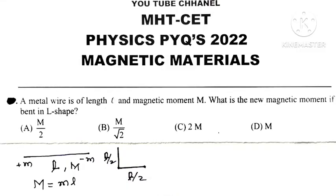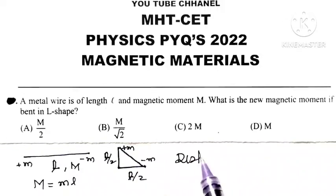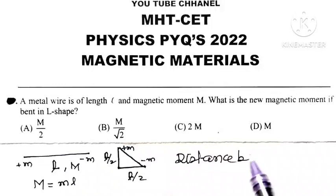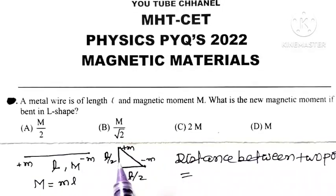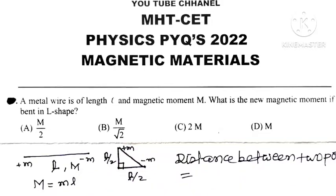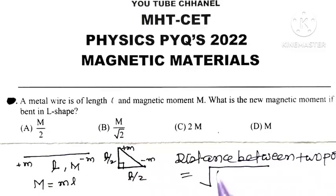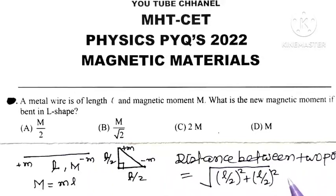But when it is bent into L shape, what is the distance between the two poles? We bent it in L shape, meaning it is at 90 degrees. According to Pythagoras theorem, the distance between two poles is nothing but the hypotenuse, equal to the square root of (L/2)² + (L/2)², which equals L divided by root 2.